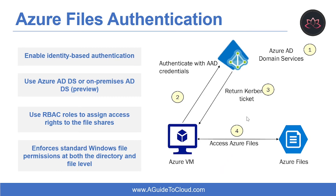Here is the identity-based authentication data workflow. First, set up your domain environment before enabling authentication on Azure file shares. Second, when an identity associated with an application running on a VM attempts to access data in an Azure file share, the request is sent to Azure ADDS to authenticate the identity. Third, if authentication is successful, Azure ADDS returns a Kerberos token. Fourth, the application sends a request including the Kerberos token, and Azure file shares use the token to authorize the request.